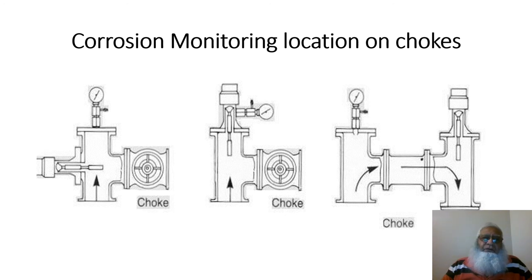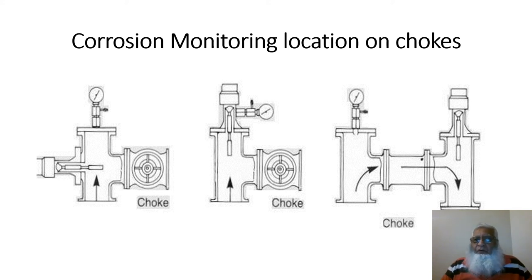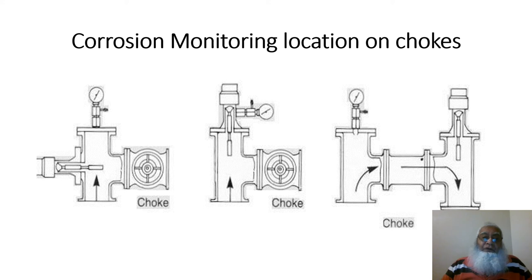This slide shows corrosion monitoring locations on chokes. The installation can be on the side of the chokes, or from the top of the chokes. It is not just about location — it is also very important to understand how to choose the location and what the correct orientation of the corrosion monitoring devices should be.